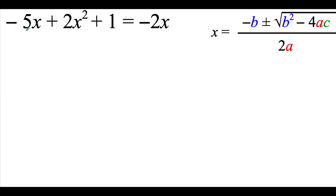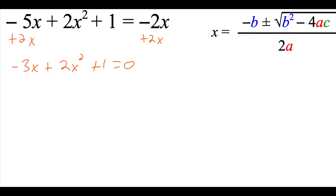Taking a look at this example, we've got the equation negative 5x plus 2x squared plus 1 equals negative 2x. First thing I notice is that this equation is not equal to zero, so I'm going to work on rearranging that. To get rid of the negative 2x on the right-hand side, I'm going to add 2x on both sides, giving me negative 3x plus 2x squared plus 1 equals 0. Next, this equation is not written in descending power order, so I'll rearrange it: 2x squared minus 3x plus 1 equals 0.